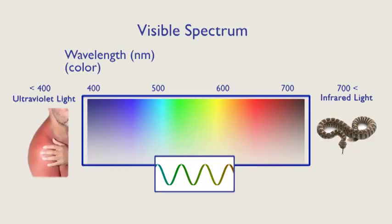Rattlesnakes can see light in the infrared range, which is greater than 700 nanometers, helping them to identify prey.